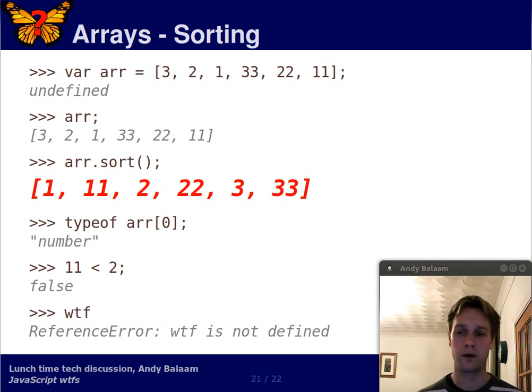But if you use the default sort on an array, it treats everything as strings. It doesn't convert anything to strings. Just for the purposes of comparing them, it treats them as strings. Do not ask me why. I don't know.